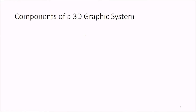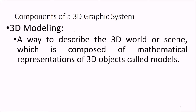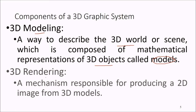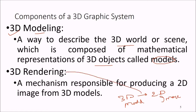What are the components of a 3D graphics system? First is 3D modeling — a way to describe the 3D world or scene, which is composed of mathematical representations of 3D objects, called models. Then comes 3D rendering — a mechanism responsible for producing a 2D image from 3D models. So the process from 3D model to 2D image is nothing but rendering.